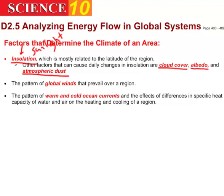We also have to remember that there are basic global wind patterns established on the planet — for example, things like the westerlies. And of course we've also got to take into consideration the warm and cold ocean currents and the effect they have upon the temperature of the surrounding land. Water has a very high specific heat capacity and has a dramatic effect upon the heating and cooling of a region.